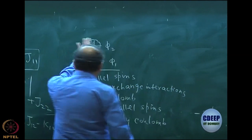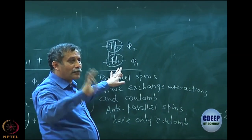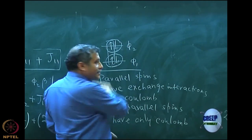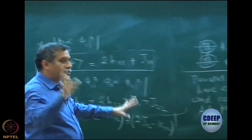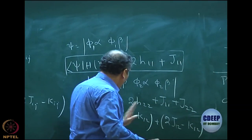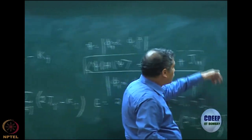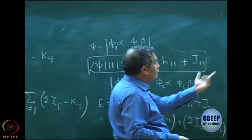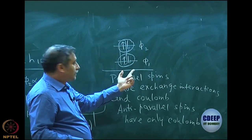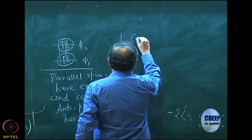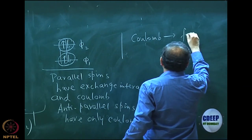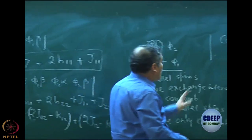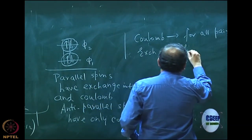Look at it this way: with 4 electrons, how many pairs are there? 4C2 = 6 pairs. Two of them are within the same orbital (J_11, J_22) and four are across orbitals (4J_12). All 6 pairs have Coulomb — there should be 6 Coulomb interactions: J_11, J_22, and 4J_12. However, only parallel pairs have exchange, so you have only 2K_12.